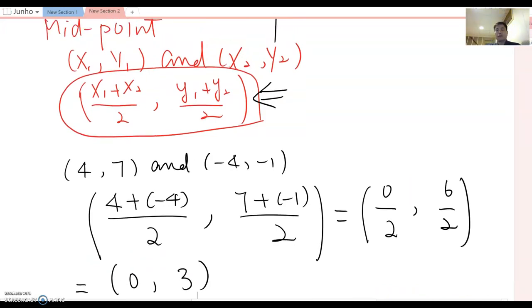So when you finalize the midpoint, you must write it as an ordered pair or coordinate. The reason is this is a point. If you just give me x equals 0 and y equals 3, then you actually give us one vertical line and one horizontal line. So that's not the right answer. You must write it using an ordered pair.